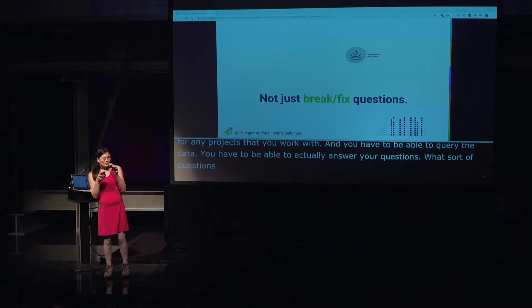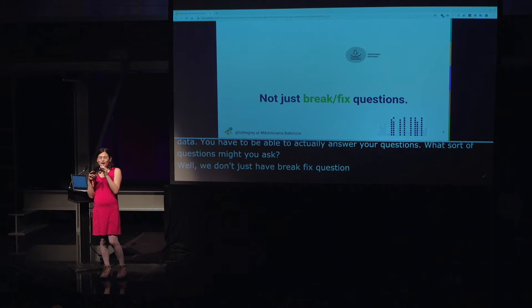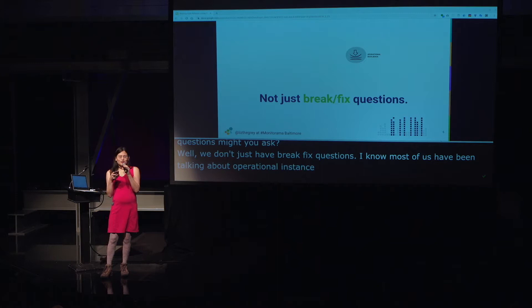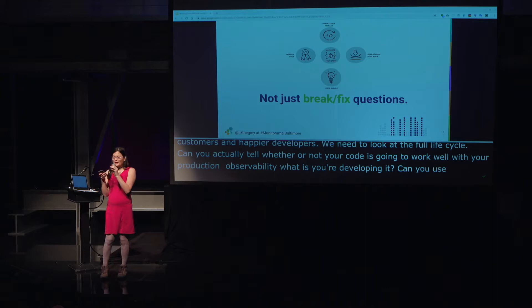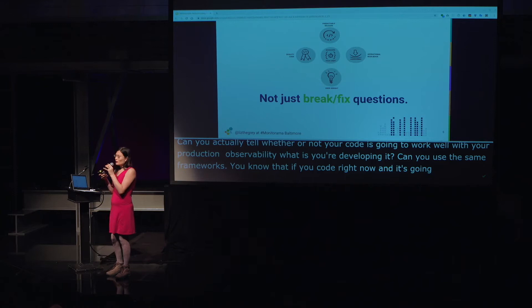What sort of questions might you ask? We don't just have break-fix questions. Most of us have been talking about operational incidents during this Monitorama, but we need to zoom out and look at the broader set of capabilities that observability lets us have — that lets us run better systems and have happier customers and happier developers. We need to look at the full lifecycle: can you tell whether your code will work well with your production observability systems when you're developing it? Can you have visibility into your build pipeline? Can you tell whether users are actually using the features you're building? This is not just about break-fix.